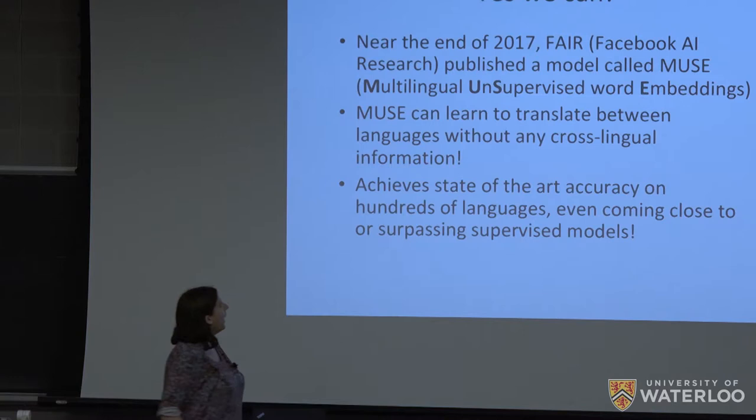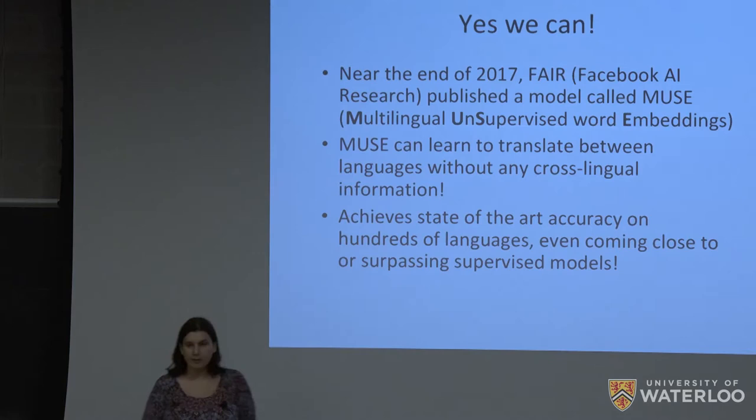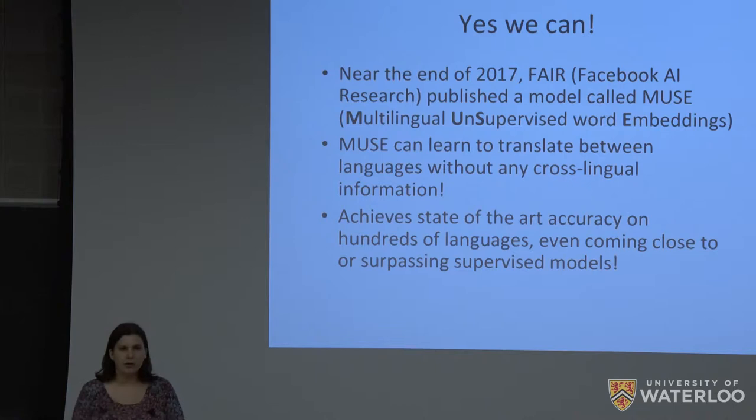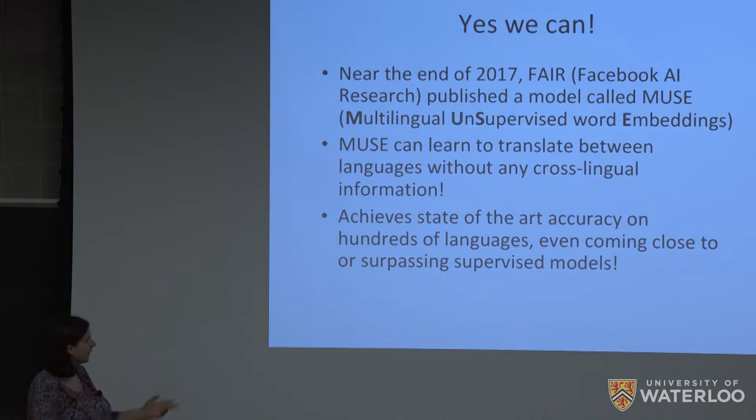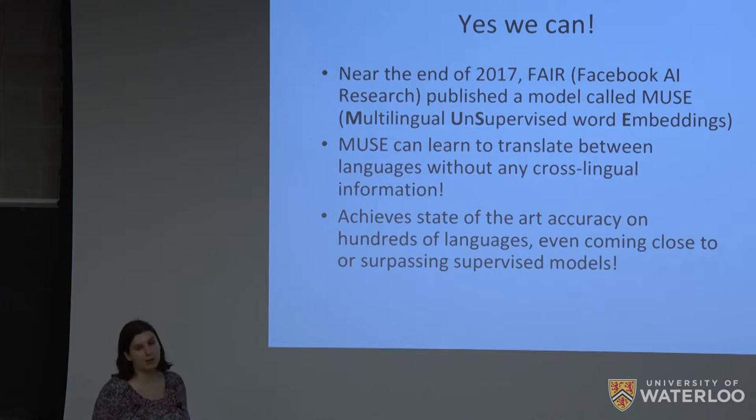A big example of this — the seminal work in the area — was a model called MUSE, which stands for Multilingual Unsupervised Word Embeddings. That was published by Facebook AI Research near the end of 2017 or beginning of 2018. MUSE can learn to translate between languages without any cross-lingual information and achieves state-of-the-art accuracy on hundreds of languages, even coming pretty close to supervised models.